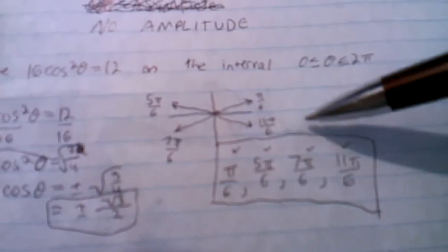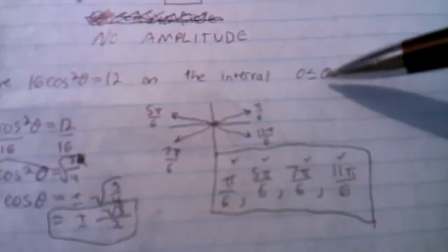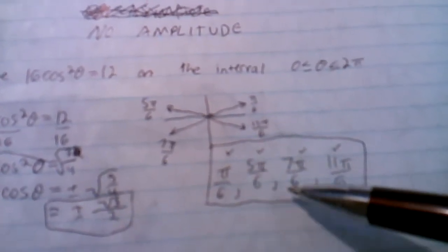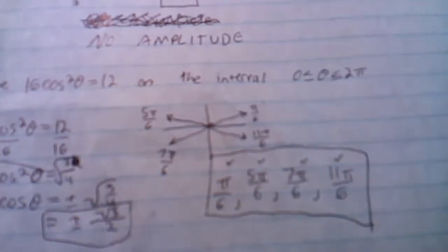Here I'm just checking to see if it's within the interval, and it is. Everything is in between 0 and 2 pi. So that's going to be your answer: pi over 6, 5 pi over 6, 7 pi over 6, and 11 pi over 6.